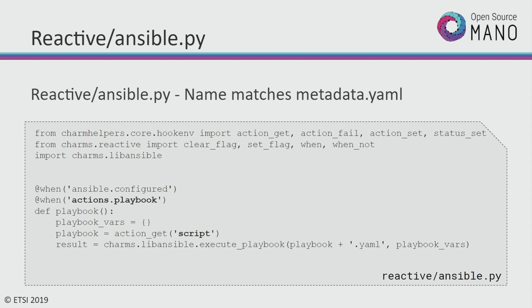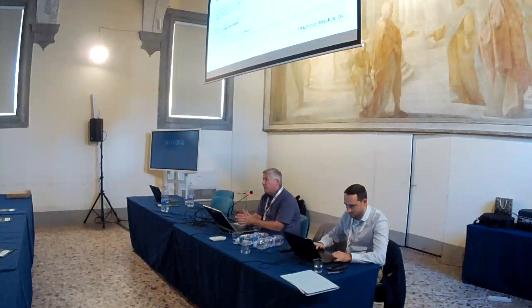Inside of the reactive, when we get called back by Juju when it's ready for us to execute, it's going to call us back with this "actions playbook" — which is the name from the action we had before — saying we're ready to execute this. What I'm actually doing is pulling a variable out from the environment to know what Ansible playbook you want to execute, and I'm calling that variable "script". So inside the VNFD, where we describe the config primitives, we specify a variable called script with a value of the name of the Ansible playbook you want to run. That way you can have different primitives execute different playbooks.